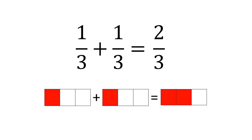All that's happened when we've added these fractions together is our top numbers, the numerators — one add one — have been added together to give two, and our denominator, the three, has remained the same. We can think of it like objects: one apple add one apple gives you two apples. So one third add one third is two thirds.